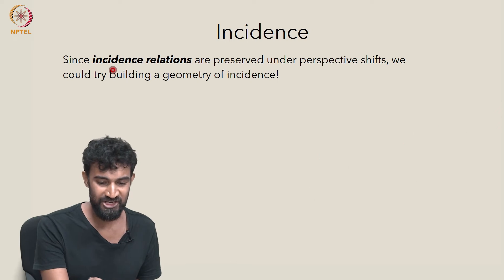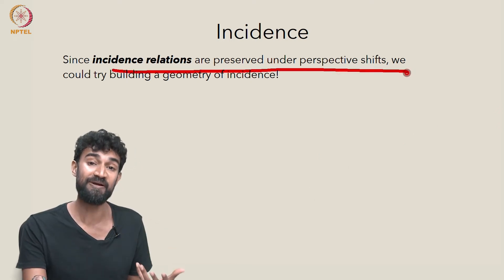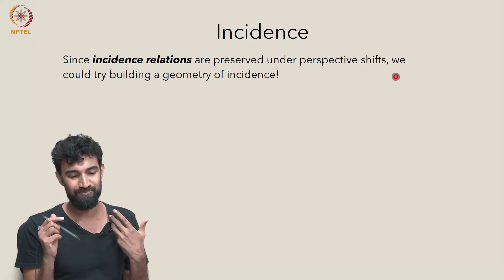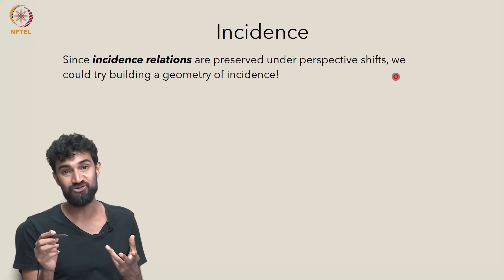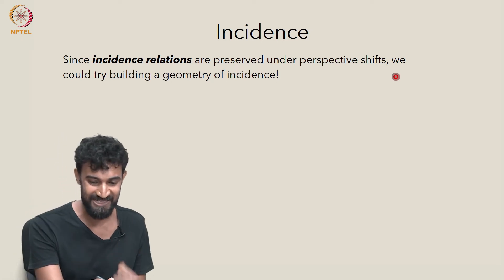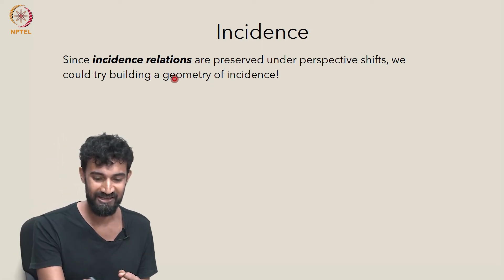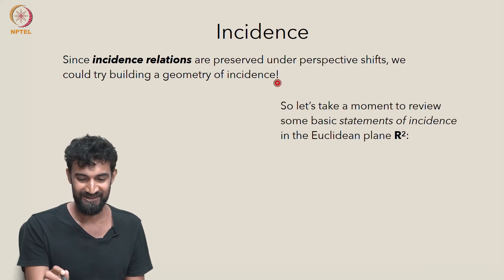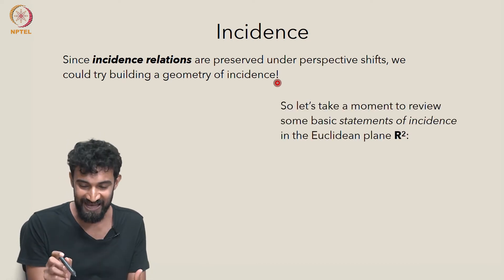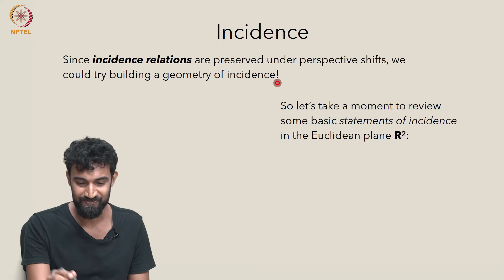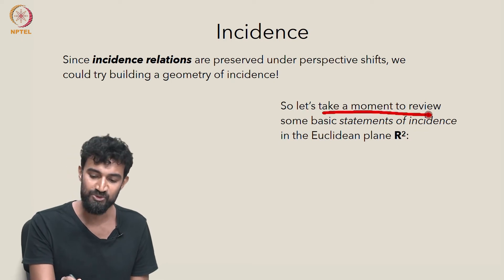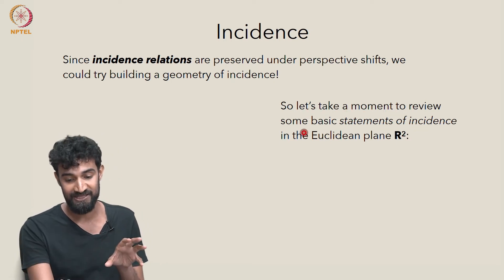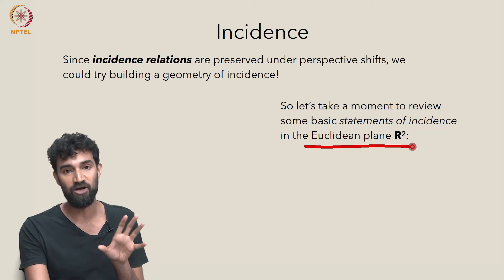Since incidence relations are preserved under perspective shifts, we could try building a geometry of incidence based entirely on incidence relations. We'll see what we mean by that as we build it. But first, let's take a moment to review some basic statements of incidence in the Euclidean plane R2.